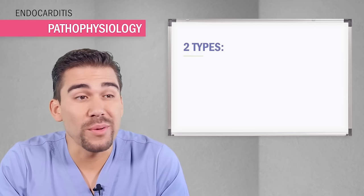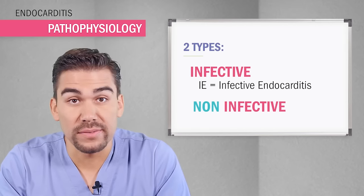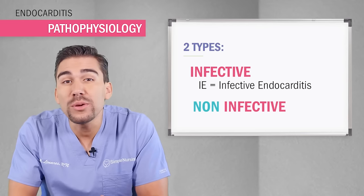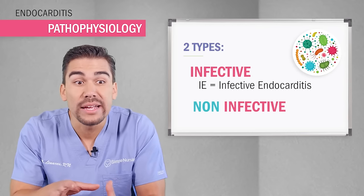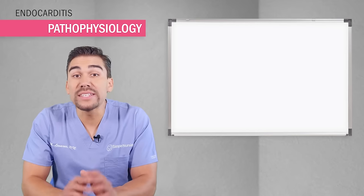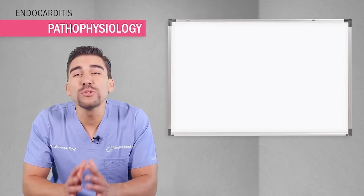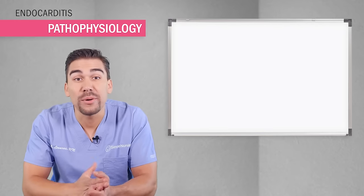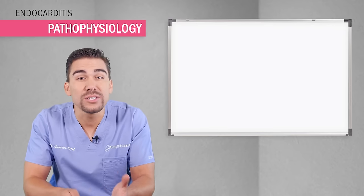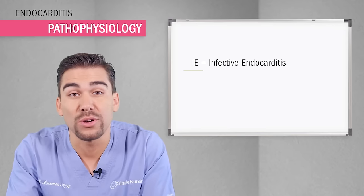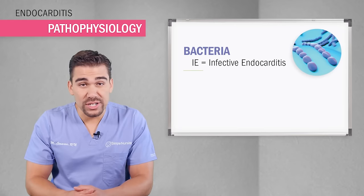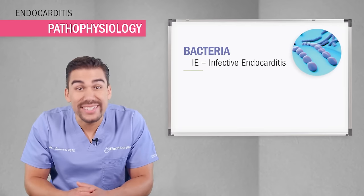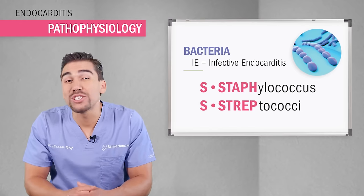We have two types of endocarditis, both infective and non-infective. Patients can suffer from autoimmune diseases like lupus, where the body attacks itself and attacks those inner layers of the heart — this is not caused by an infection. But the most common type tested on in both the NCLEX and nursing exams is infective endocarditis, which is caused by bacteria and fungi.